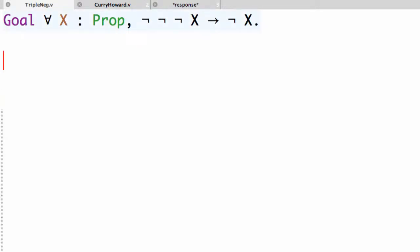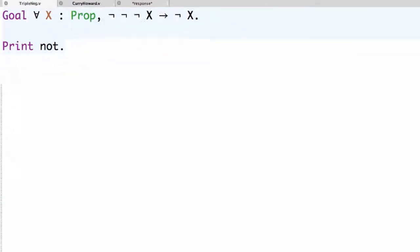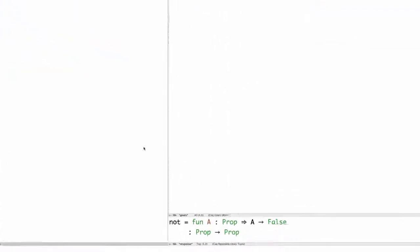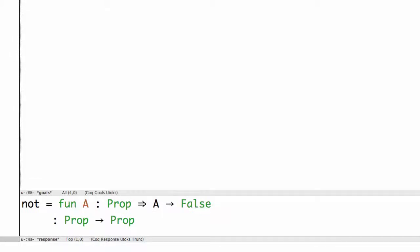So what is this negation? This negation symbol is just notation for the object defined in Coq as not. We can use the print command in Coq to get information about this definition, such as how it's defined and what is its type. The definition of not in Coq is lambda a in prop, a implies false. So that means if you apply not to a proposition, it's defined to be that proposition implies false.